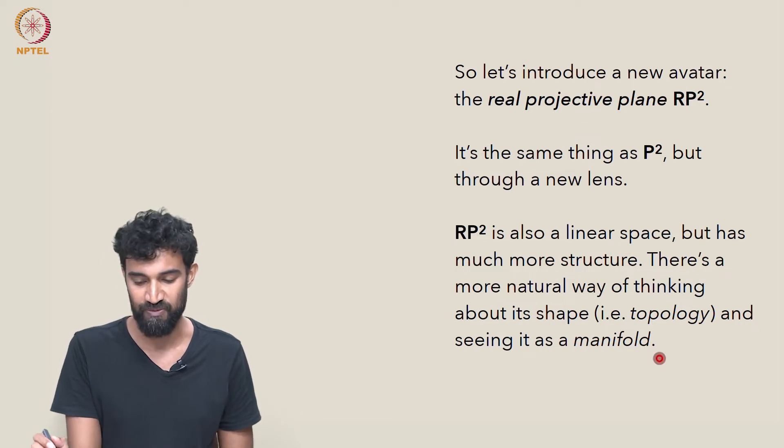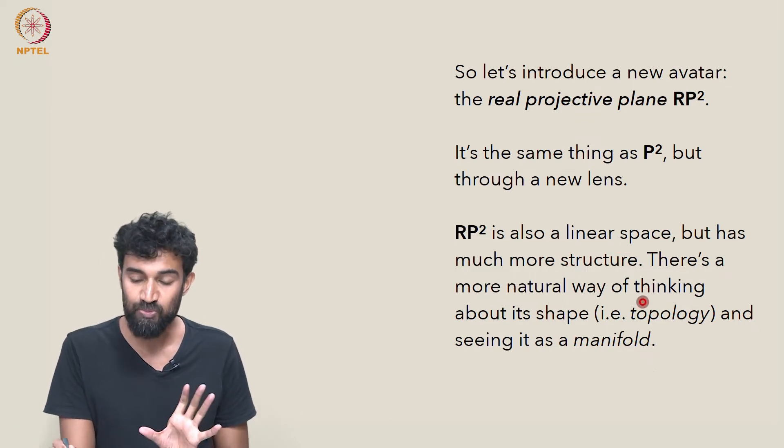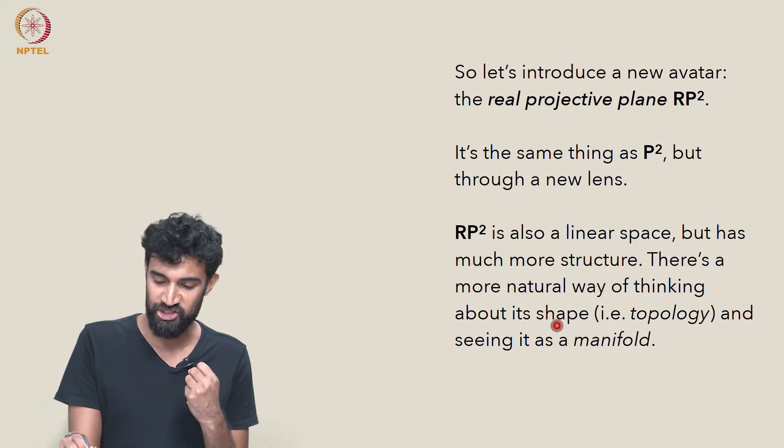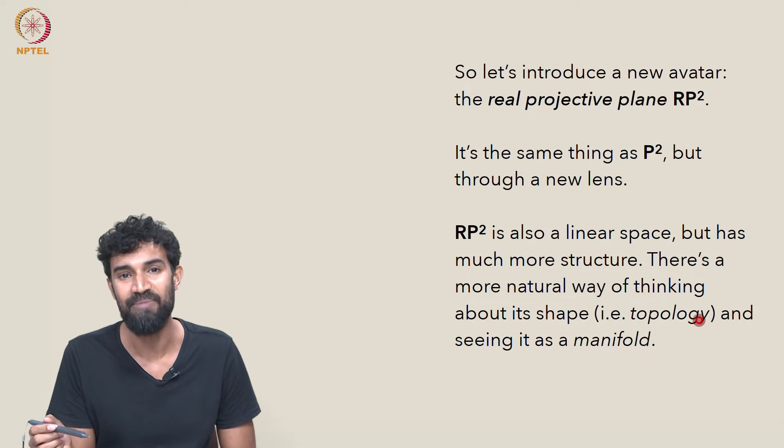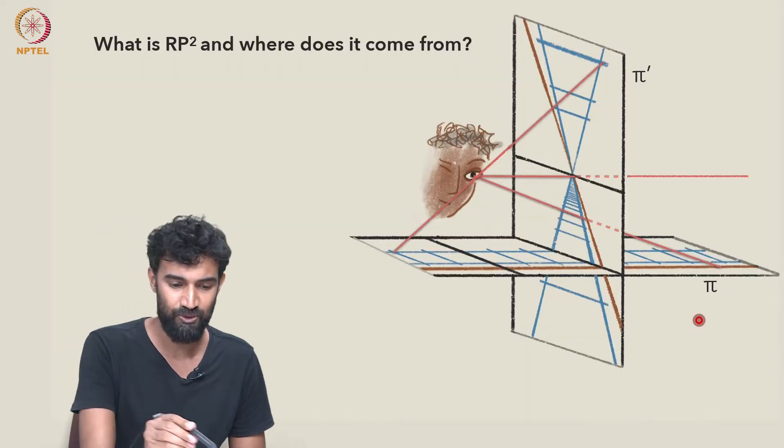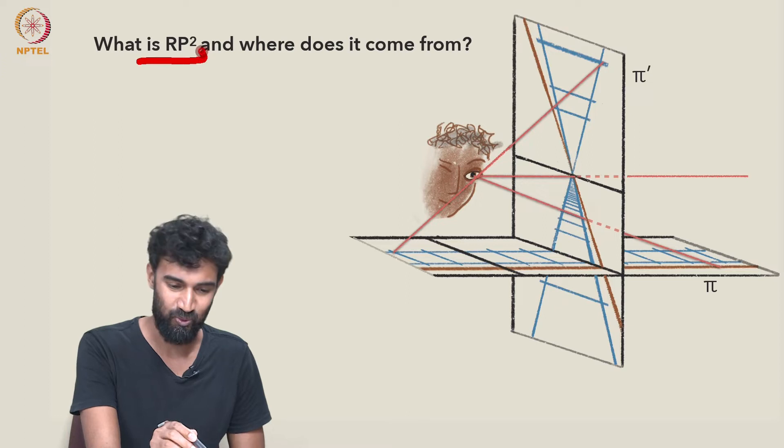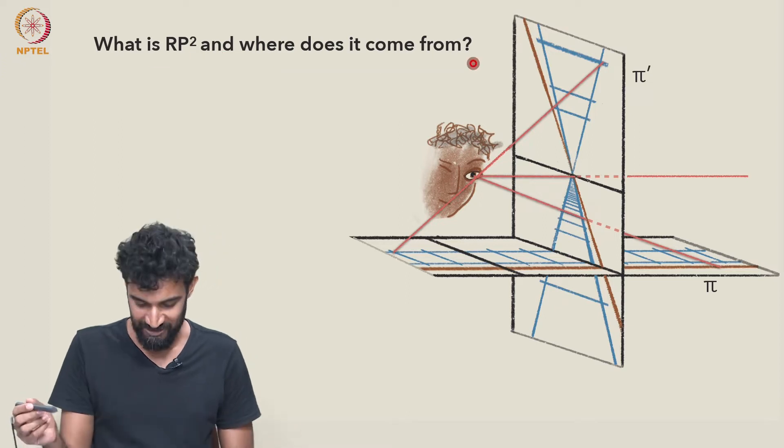There's a much more natural way of thinking about its shape, i.e. its topology, and even seeing it as a manifold. So an important question to start with is just what is RP² and where does it come from?